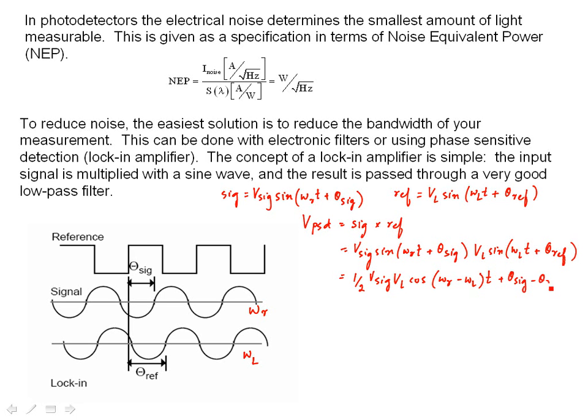and the result is half v-signal sine omega r minus omega l t plus, theta sig minus theta ref. Now, this is one component at the difference frequency. Now, there is another component at the sum frequency, which is omega r plus omega l of t, and the sum of the phases.